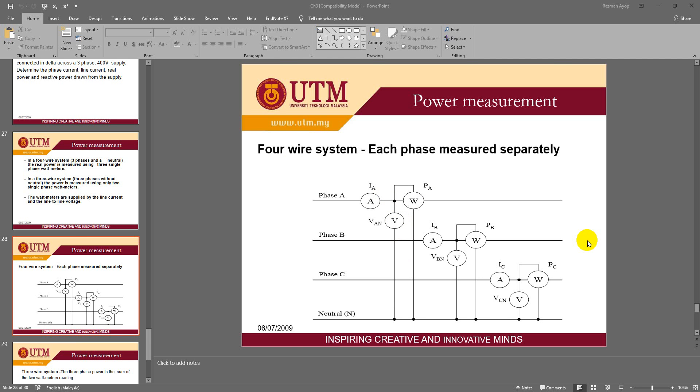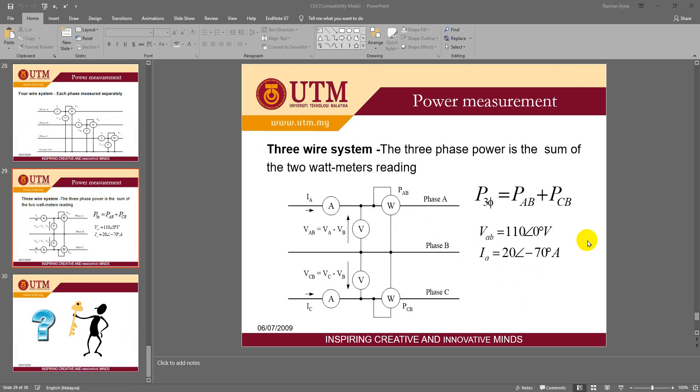So how to overcome this? We use the two watt meter method. Basically, you find the voltage vab, then you get the voltage vcb—not vbc but vcb, make sure you differentiate that—and then use the current ia and ic. Then you just get the power from there and add the power pab and pcb. That's it. That is how you get the power for a three-phase system using the two watt meter method.